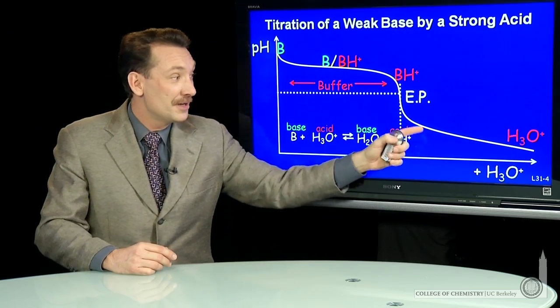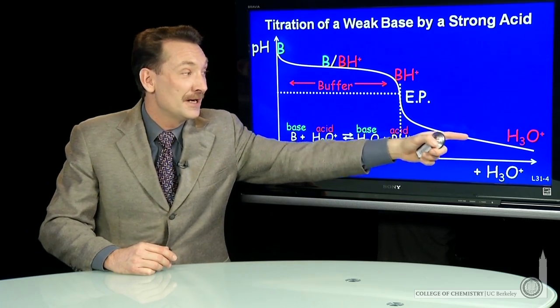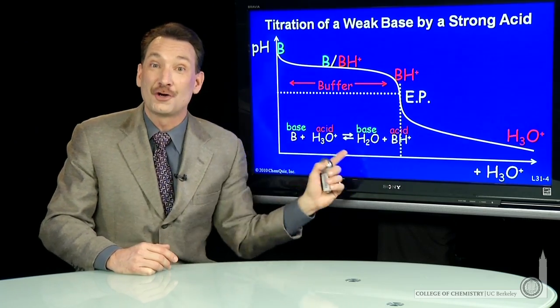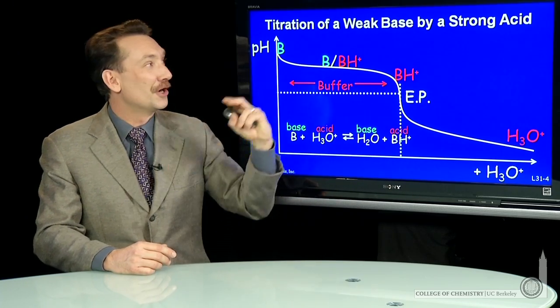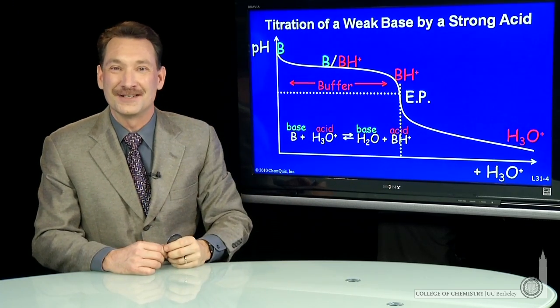As you continue out, the pH will start to be dominated by the fact that you're just adding strong acid. So these are the regions of the titration curve for a weak base by a strong acid.